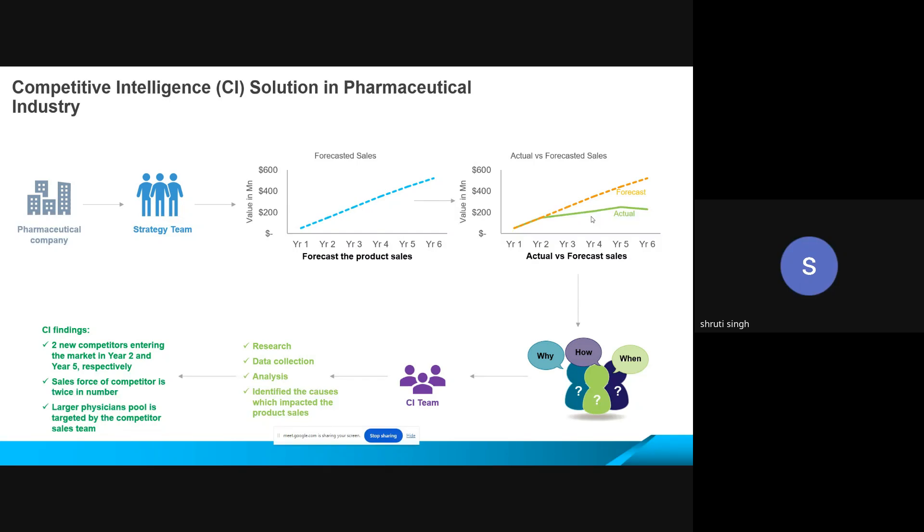Should I go ahead? Sorry, because I lately joined, probably I might have missed out the initial discussions. What's the point that we are discussing here today? We are trying to understand competitive intelligence, importance within the pharmaceutical industry. Okay, so as I understand from the slide, I think there are forecasted sales but actually there is a difference in the forecasting because of the involvement of other competitors, right? Correct, yeah, okay.